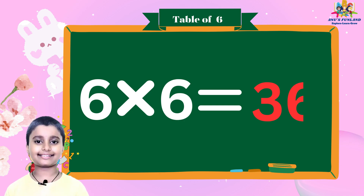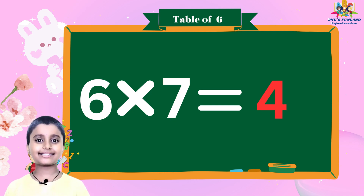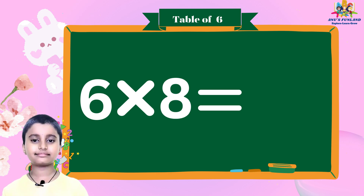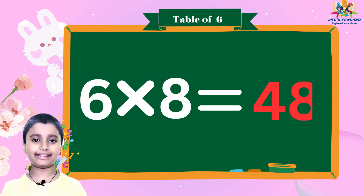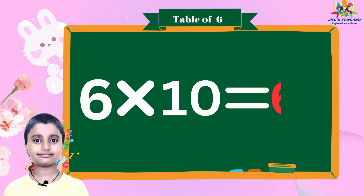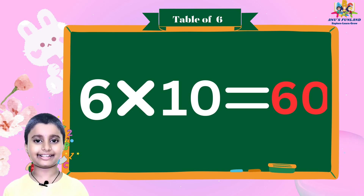Six six are thirty-six. Six threes are forty-two. Six eights are forty-eight. Six nine's are fifty-four. Six threes are sixty.